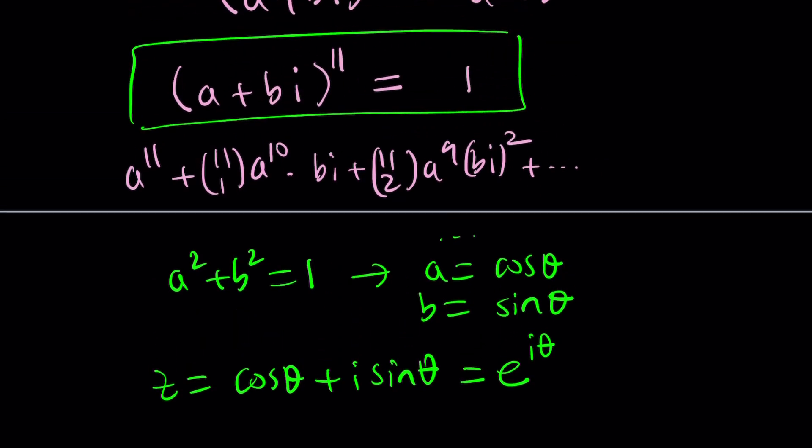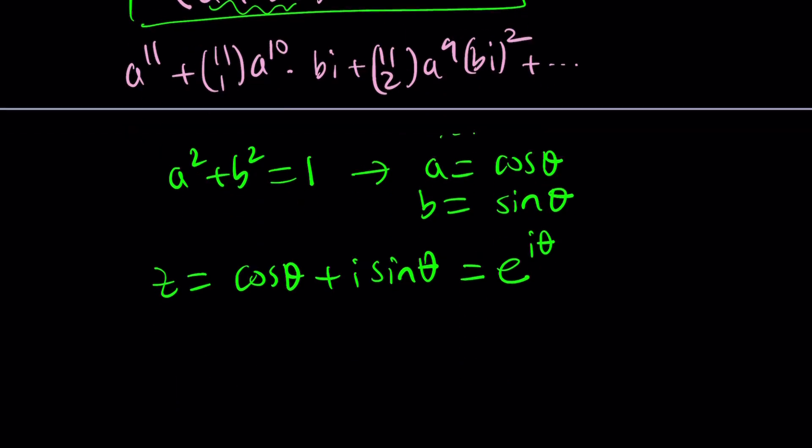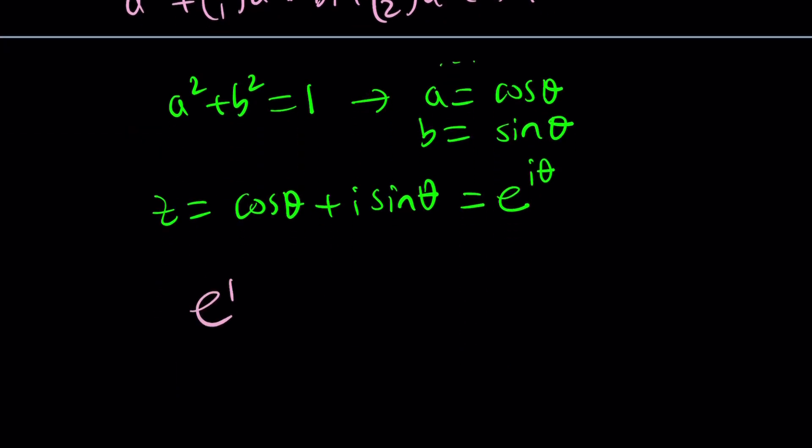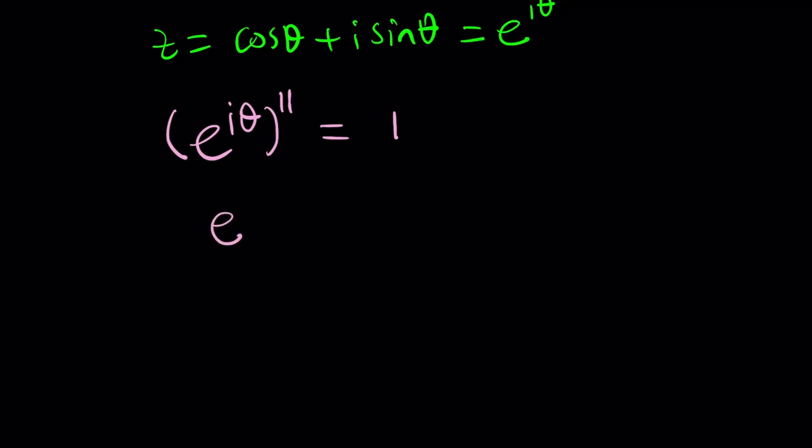And now, replace our number, a plus bi, with e to the i theta, and something interesting is going to happen. You can raise it to the 11th power and set it equal to 1. This is exponentiation, e to the power 11 i theta equals 1. But does that mean theta is 0, because e to the power 0 is 1? Yes, it's one of them, but there's other solutions. Obviously, you're supposed to be getting 11 11th roots of unity. There's going to be 11 solutions. So how do you find them all? You can basically write the 1 as e to the power 2 pi n i, and then cross out the i's, and end up with something like 11 theta equals 2 pi n. Of course, n is an integer.